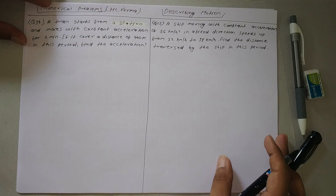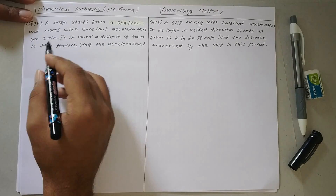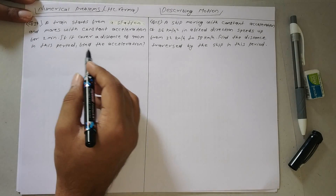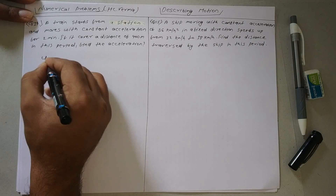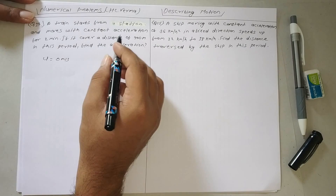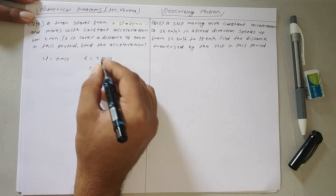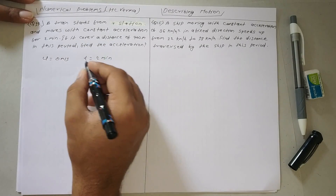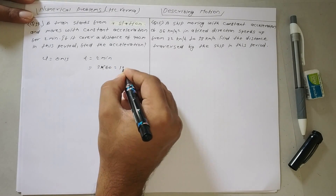The next question: a train starts from a station and moves with constant acceleration for 2 minutes. Since the train starts from the station, u is 0 meters per second. We convert 2 minutes into seconds: 2 times 60 equals 120 seconds. So t is 120 seconds.